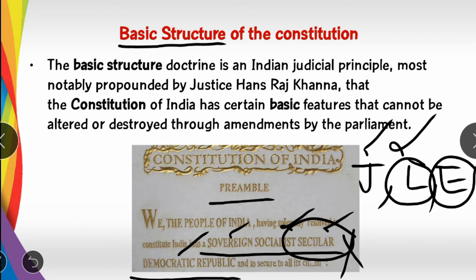The Constitution provides a list of its core elements. Parliament can do amendments to the Constitution, but if those amendments violate the Constitution, the courts can interfere. This is the basic structure doctrine — certain points in the Constitution cannot be violated through amendment.